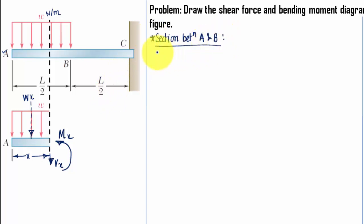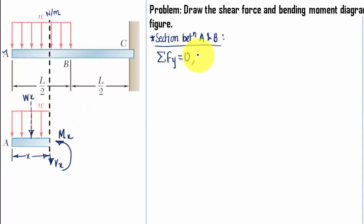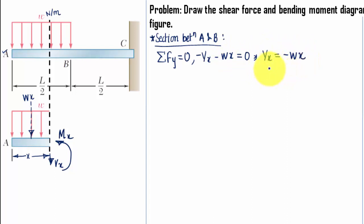Using the static equation of equilibrium — summation of all forces in the y-direction equals zero — we've got Vx downwards and W·X downwards, both negative: minus Vx minus W·X equals zero. Therefore Vx equals negative W·X. This means the shear force between A and B is a function of X, so as X increases, shear force increases.